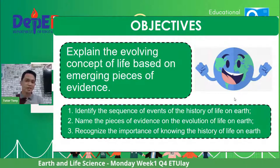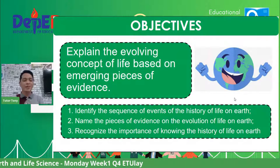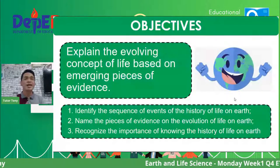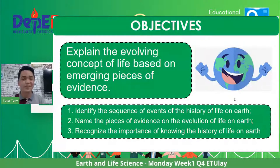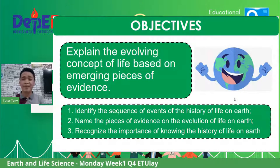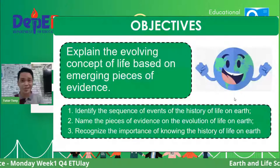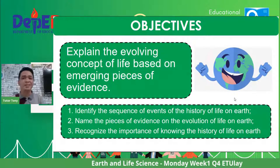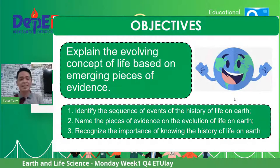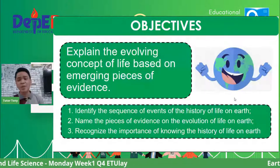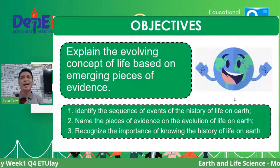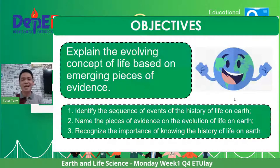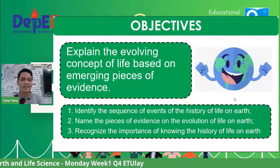Our specific objectives are: first, identify the sequence of events in the history of life on Earth — you already have some idea from last quarter's geologic time scale. Second, name the pieces of evidence, including fossils and rocks, which are part of the evidence on the evolution of life on our planet. Finally, recognize the importance of knowing the history of life on Earth as a senior high school Filipino learner.